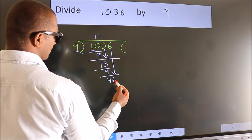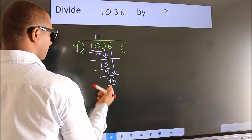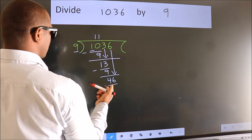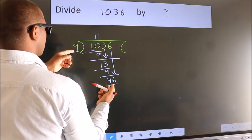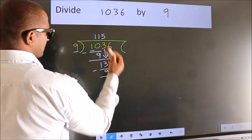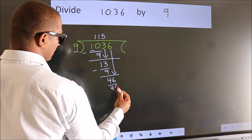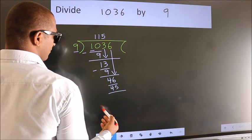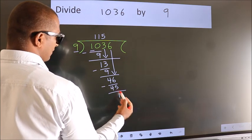6 down, so 46. A number close to 46 in the 9 table is 9 fives, 45. Now we subtract. We get 1.